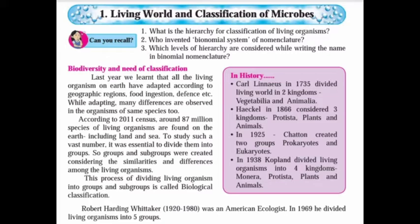According to 2011 data, around 87 million species of living organisms are found on Earth, including land and sea. We know that 75% of Earth is covered with water and the remaining 25% is land. To study such a vast number of organisms, it was essential to divide them into groups and subgroups, considering the similarities and differences among living organisms.